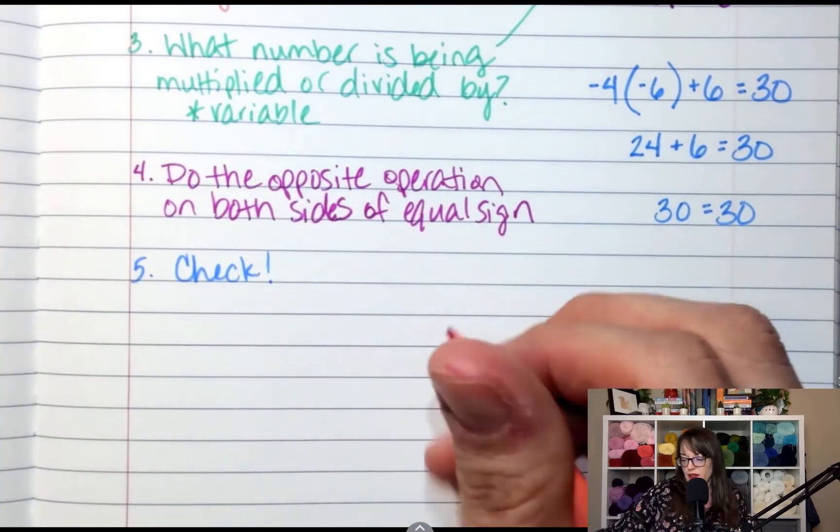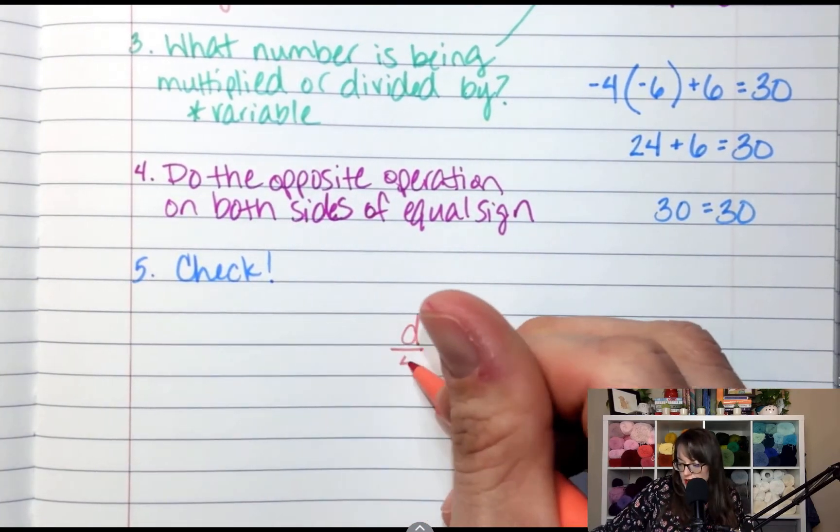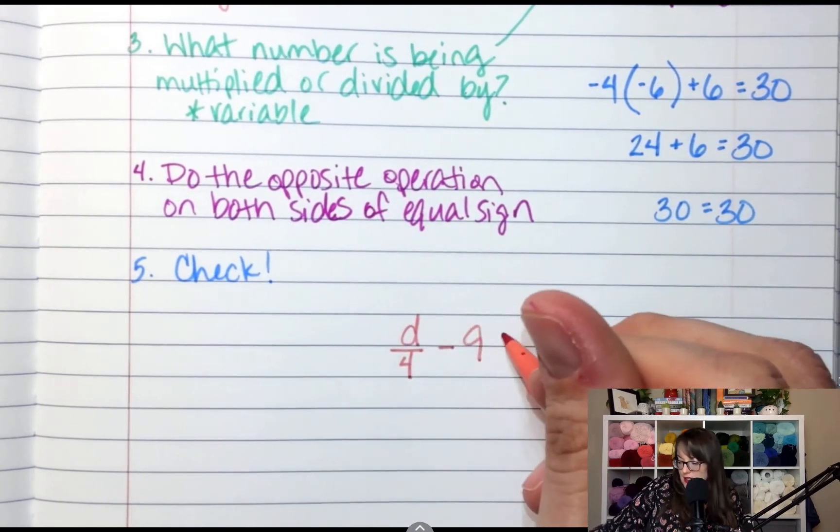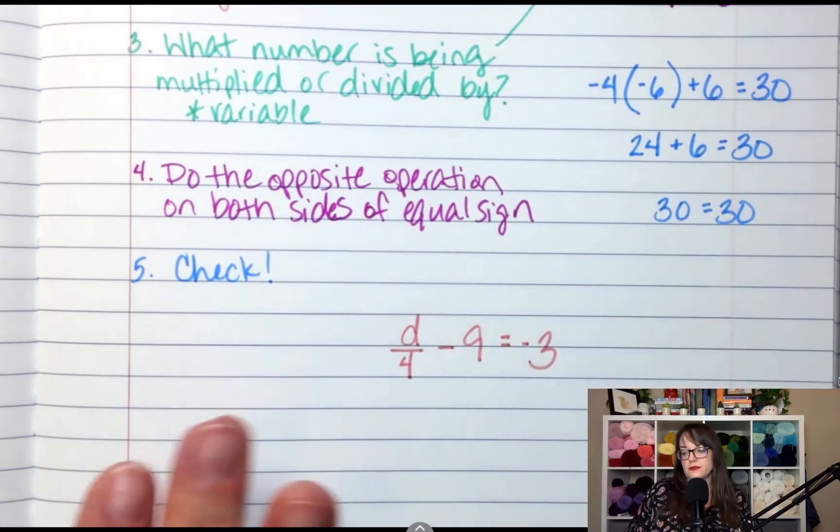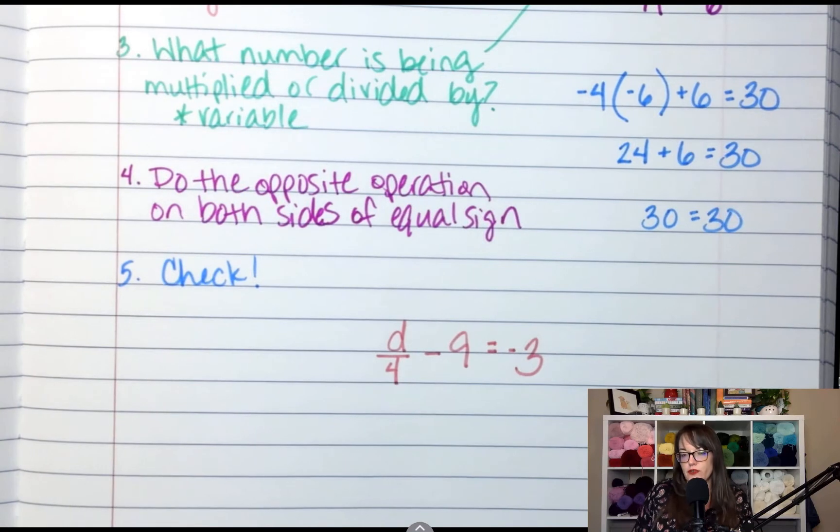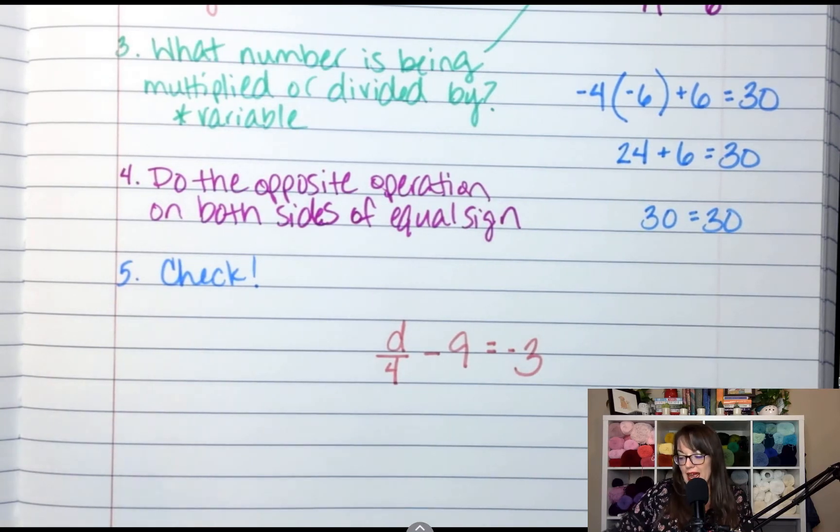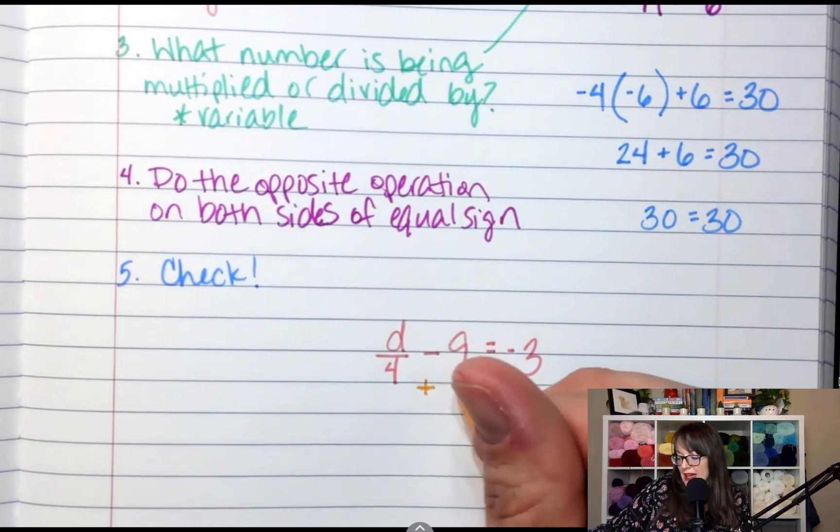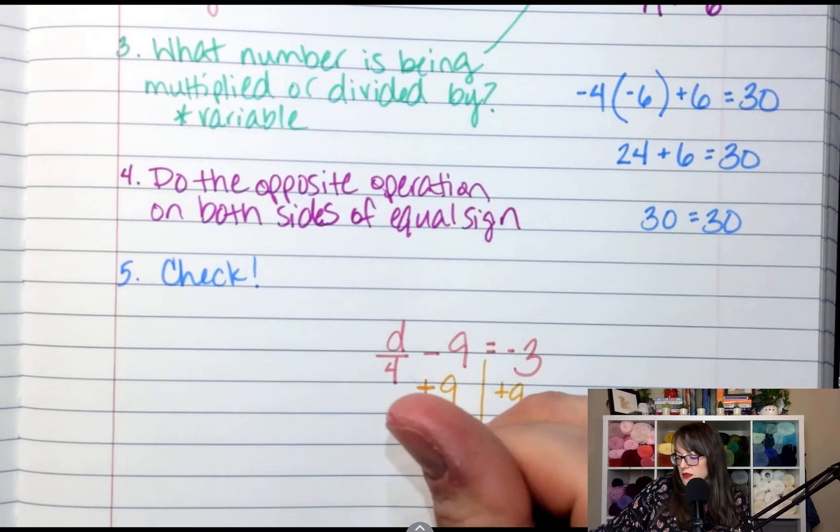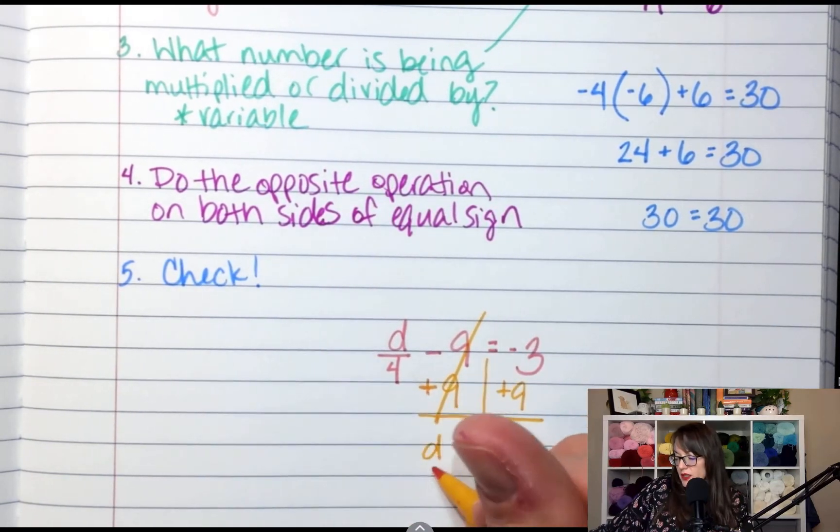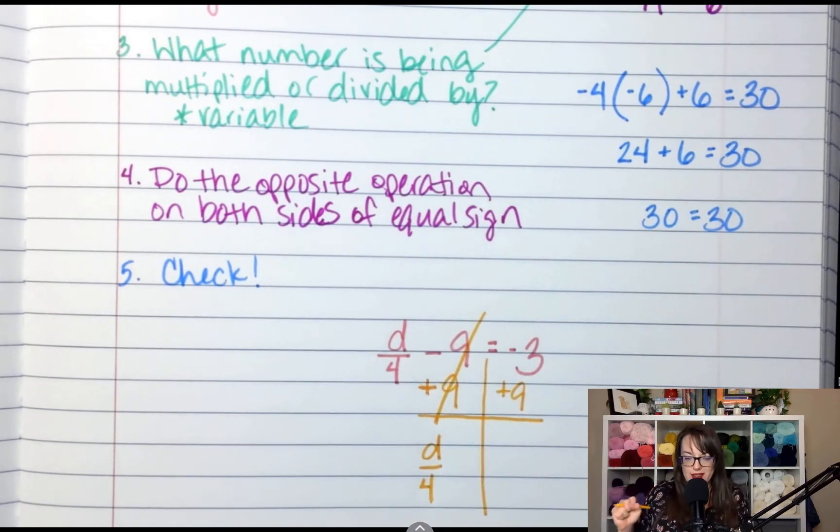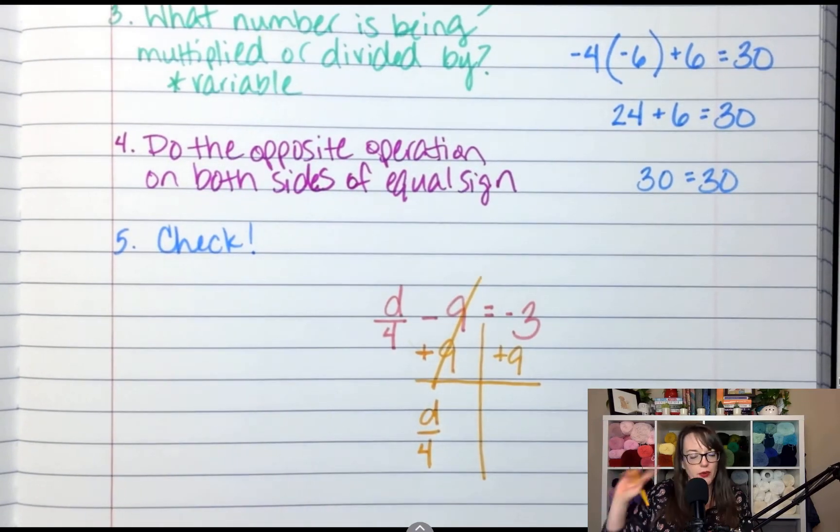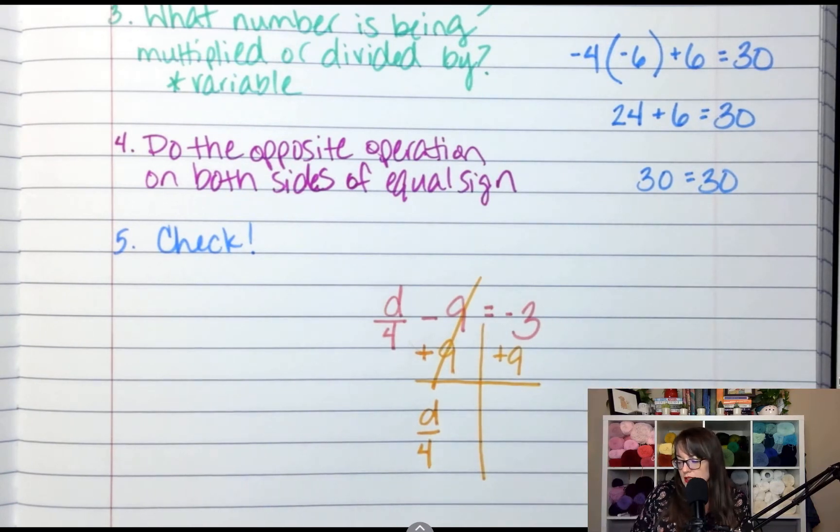Let's do one more. If you have d divided by 4 minus 9 equals negative 3, what do you do first? We're going to add 9. Step one, I'm looking for the adding and subtracting. So instead of minusing 9, I'm going to add 9 to both sides of the equal sign. Those cancel. I'm left with d over 4. Write all of your steps always. I know you're going to want to skip to the end. Start practicing while they're easy so that when they get more advanced, you already have good habits. What is negative 3 plus 9? 6.